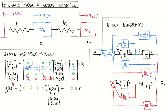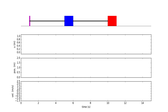This led to the fourth-order state equation and output equation as shown. The block diagram shows the blue part modeling the dynamics of the blue object and the red part modeling the red object. We can see that the states are interconnected, so the behavior of one object influences the behavior of the other. For a set of arbitrary parameters, we simulated the step response, showing the input, displacements of the two objects, and velocities at the bottom.